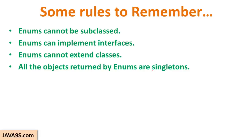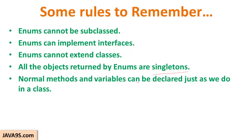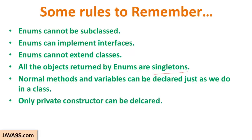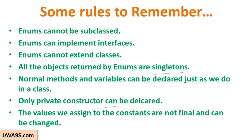All objects returned by enums are singletons. Normal methods and variables can be declared just as in a class — that is why enums are like a combination of interface and class giving you the power of both. Only a private constructor can be declared. The values assigned to constants are not final and can be changed — only the constant names are final. So if you provide set value or set price methods, you can change those values.